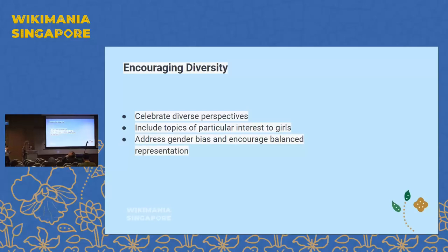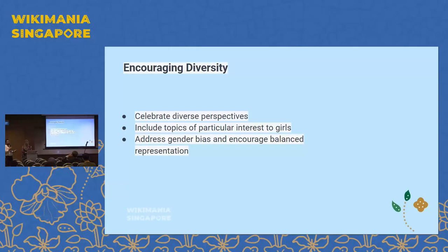By encouraging school girls, we achieve a diverse range of contributions. Our main work was originally a wiki club I founded in 2015 aimed at increasing Arabic content inside universities, so our main participants were university students. Now we are going to primary and secondary schools. We include topics of particular interest to the girls — we give them a general category, they find what they love to translate, and by doing this we address the gender gap bias.